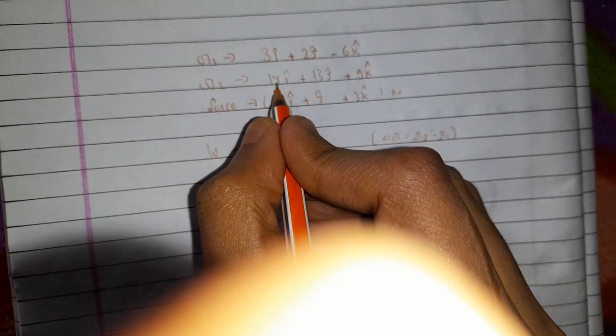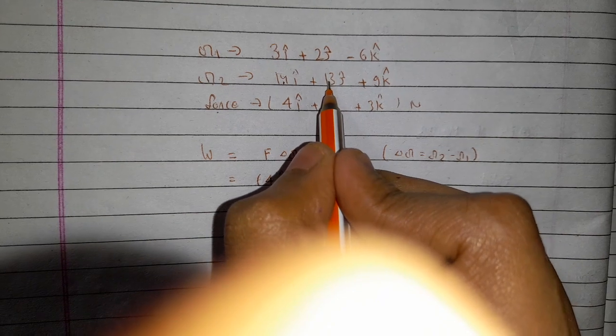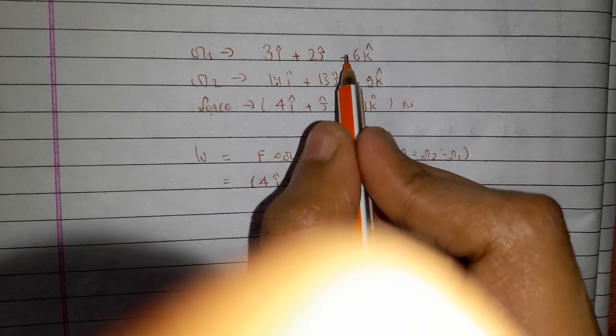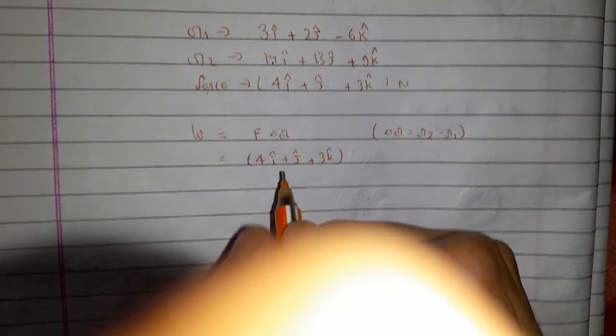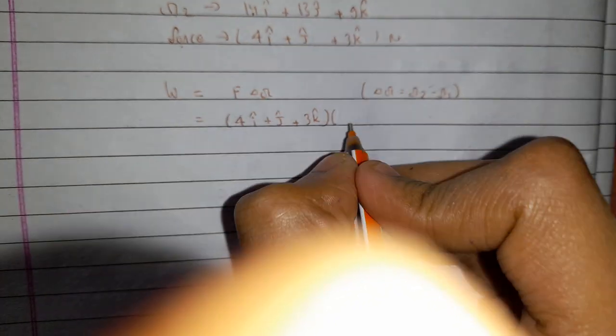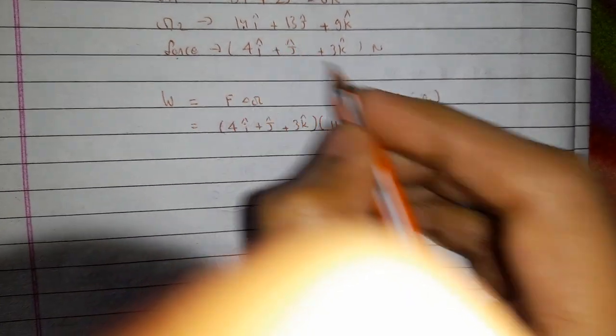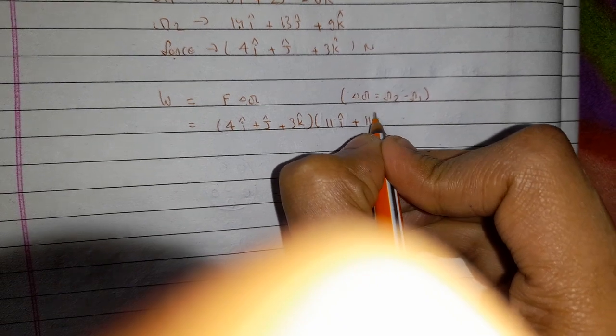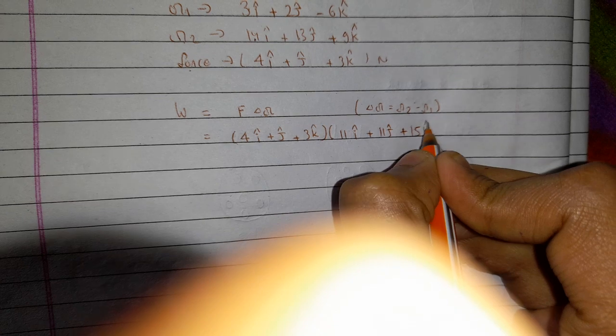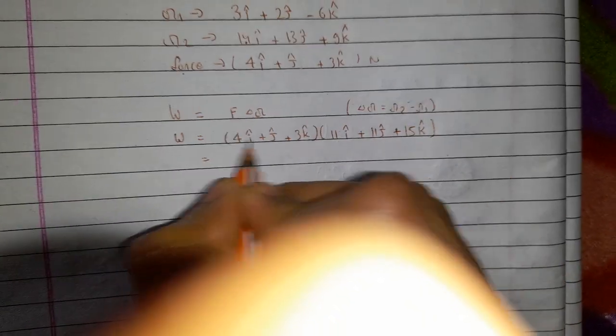r2 minus r1, that means 14i cap minus 3i cap, 13j cap minus 2j cap, plus 9k cap minus minus 6k cap. That becomes 14 minus 3 equals 11i cap, plus 13 minus 2 equals 11j cap, and this becomes plus 15k cap.